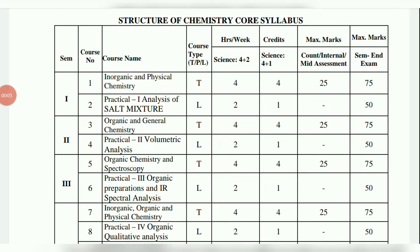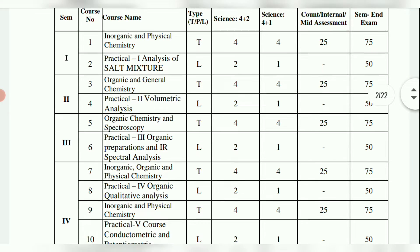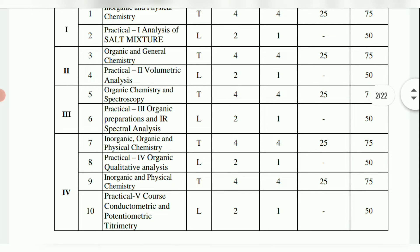Hello everyone, welcome back to Homely Classes. BSc Chemistry 4th Semester, Paper 1 — Inorganic, Organic and Physical Chemistry — important model question paper. There are 2 papers in 4th Semester, each carrying 75 marks. All previous paper videos are in the 'Sem4 Chemistry' playlist. The link is in the description — check there for all Sem4 Chemistry related videos.